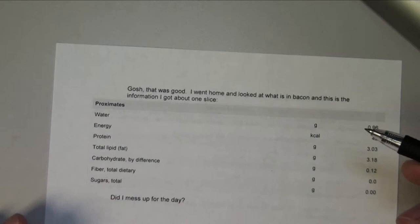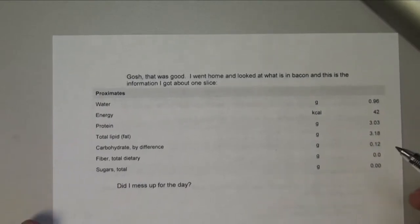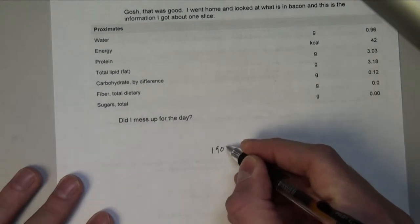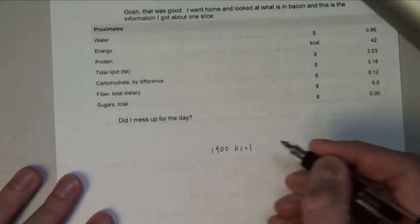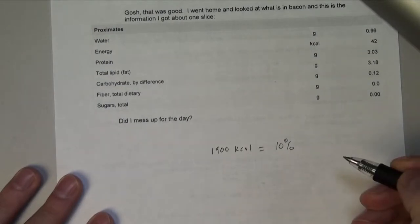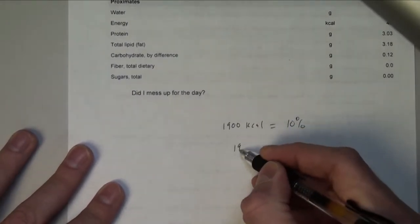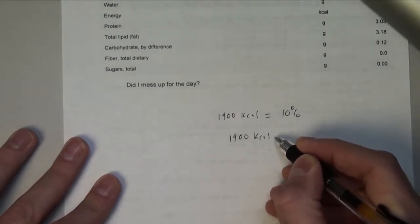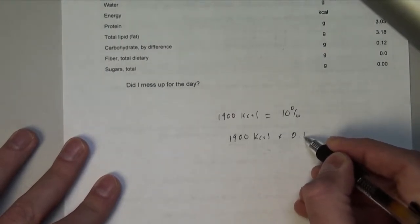So the question here is, we want to do a couple bits of math. With our 1,900 kilocalories, we want to figure out 10% of that. As we saw before in our other math, we'll take 1,900 kilocalories and multiply that by 0.10.